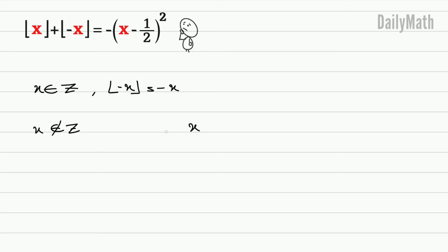the definition says x is greater than floor of x and smaller than floor of x plus 1. Now we multiply all sides of this inequality by negative 1. So here we have negative x, this is negative floor